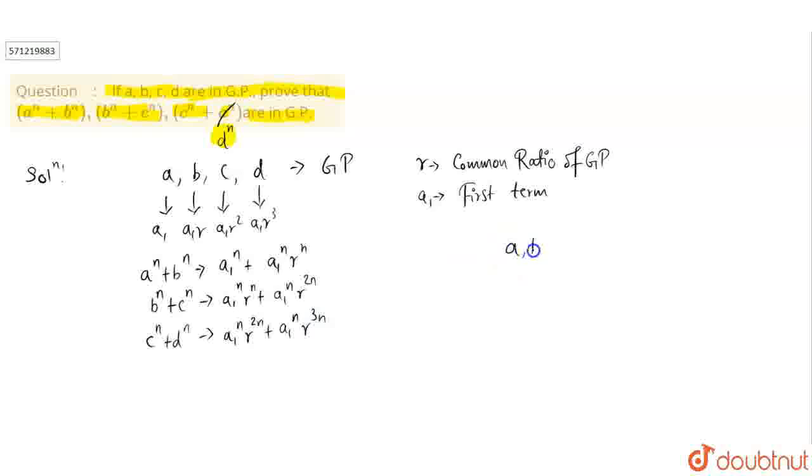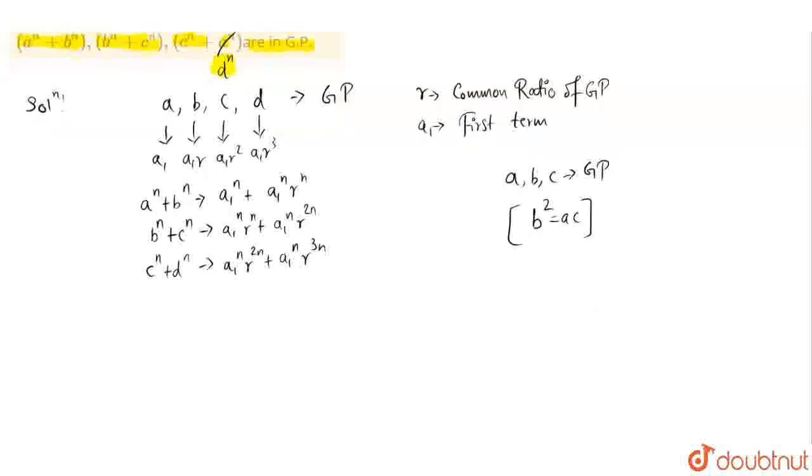If A, B, C are in GP, then the condition they should satisfy is B square should be equal to AC. To prove these three numbers are in GP, we need to show that B power N plus C power N whole square should be equal to A power N plus B power N into C power N plus D power N.